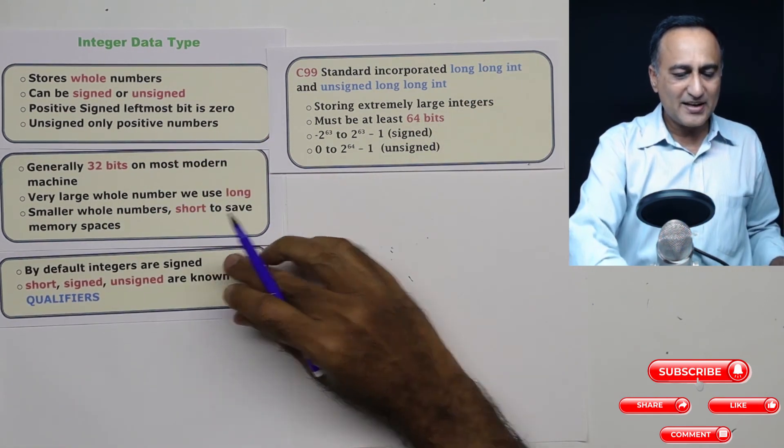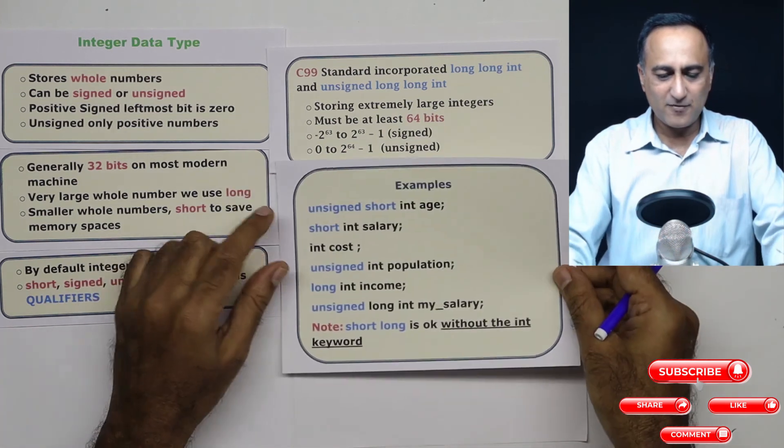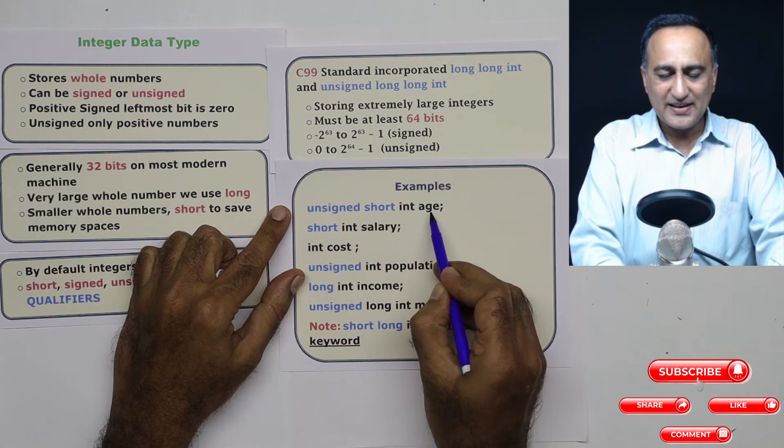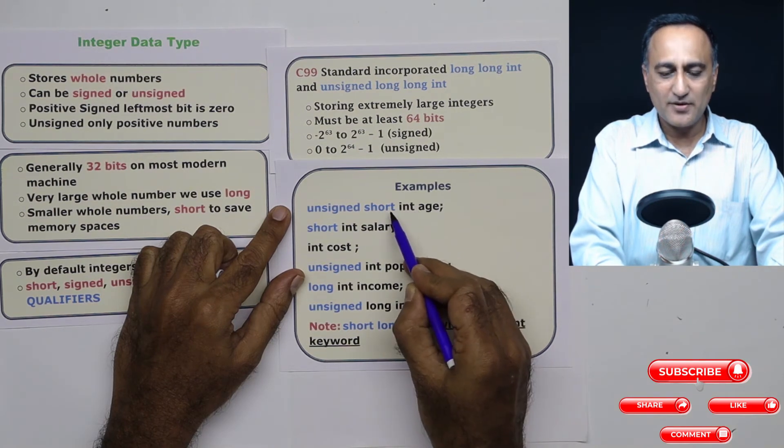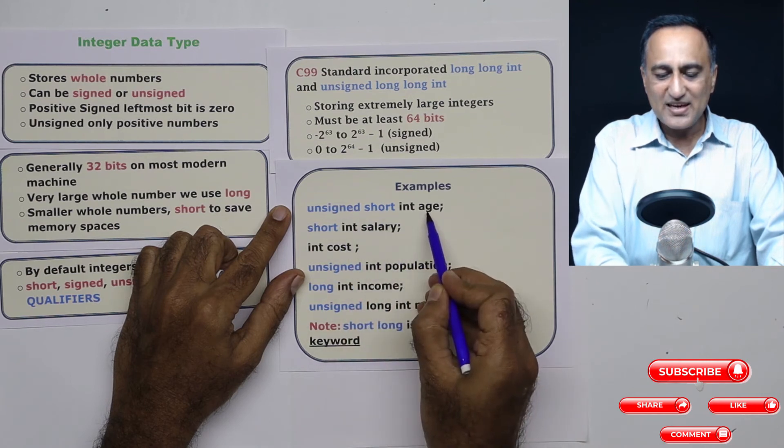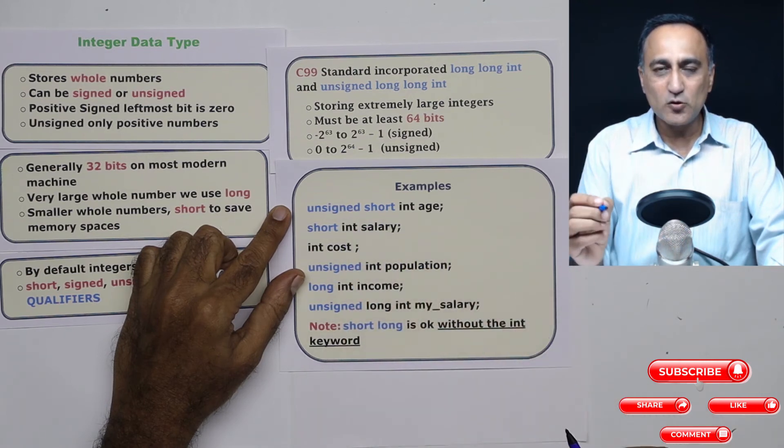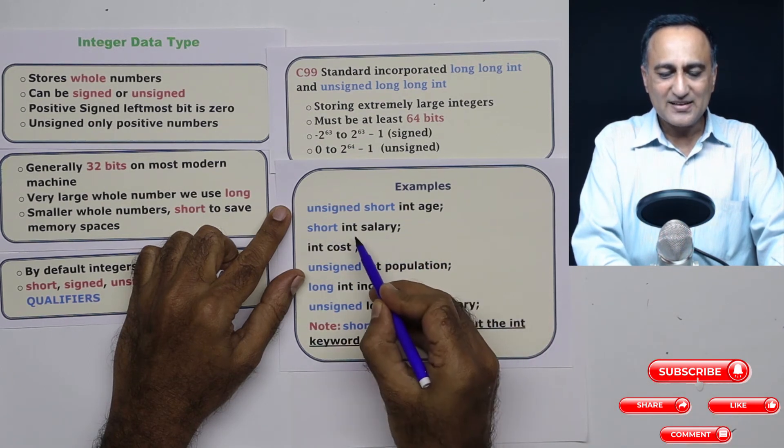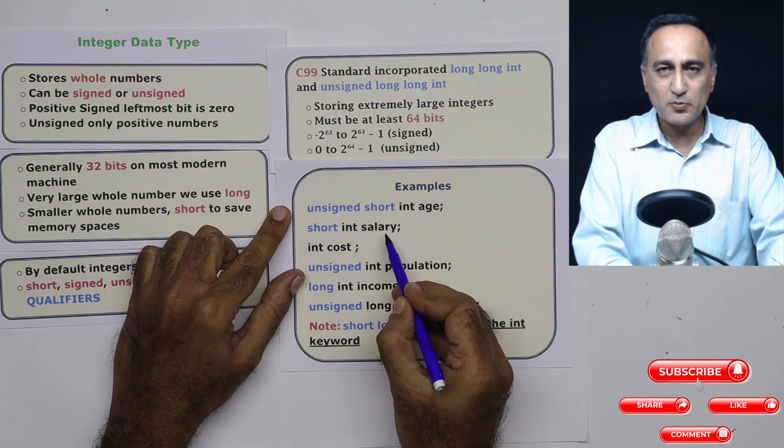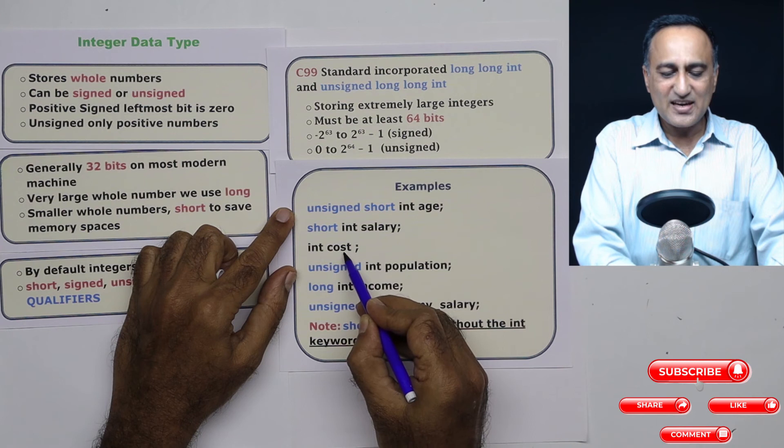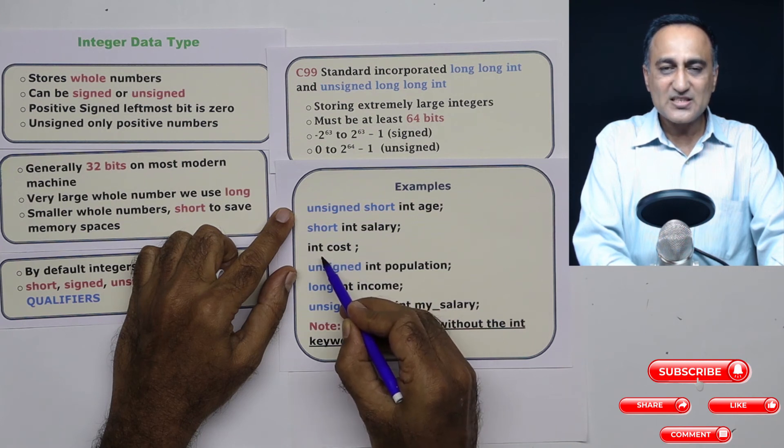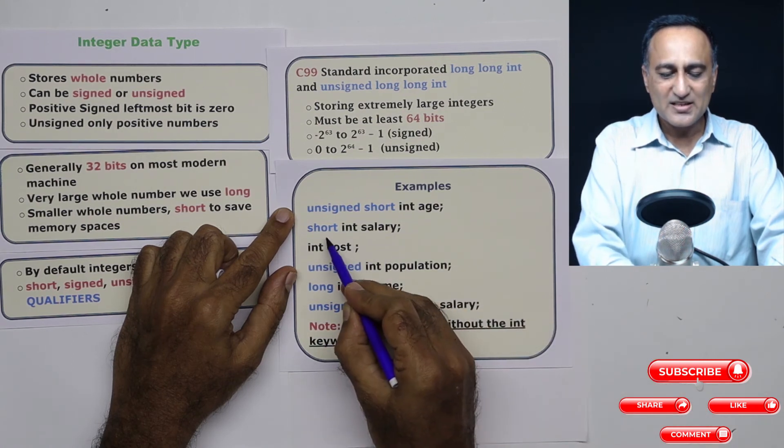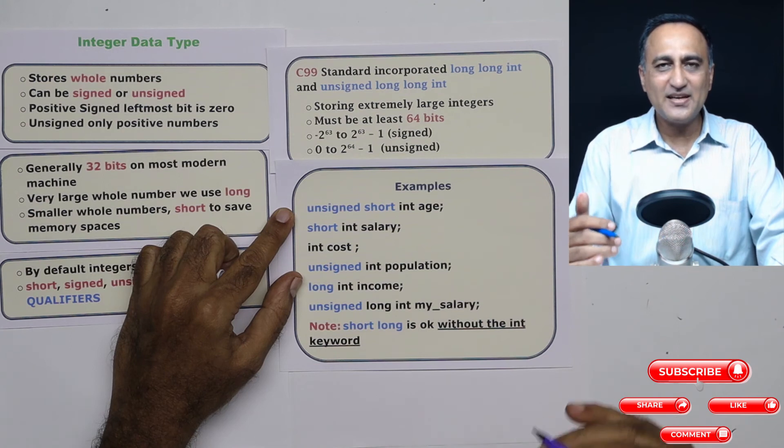Now examples of declaration of integer variables are as follows. Here what I am doing is I am saying unsigned short int age. This int is actually optional when I am using it with short. What this means is age can store a value between 0 to any positive side based on the limit of int. Short int salary, this is a signed int, it can store salary which is both positive and negative. This is again a cost which is a signed integer which can store both positive and negative. This is a short int, this is a normal int. The size of short int will generally be much less than int.